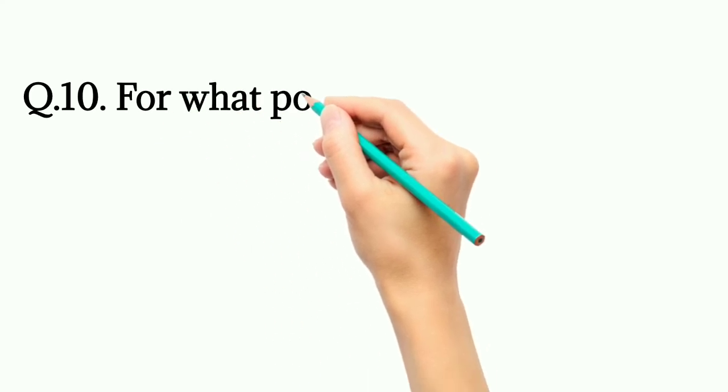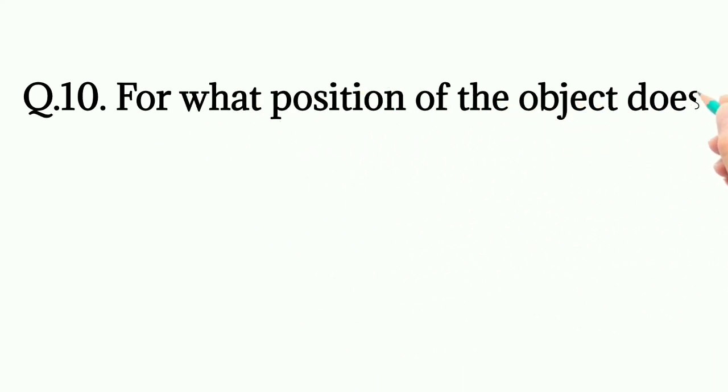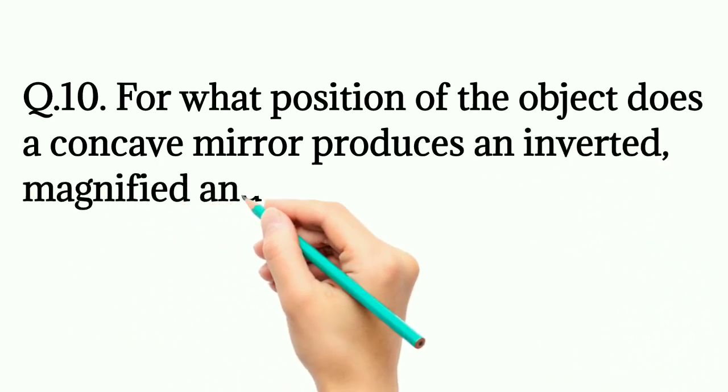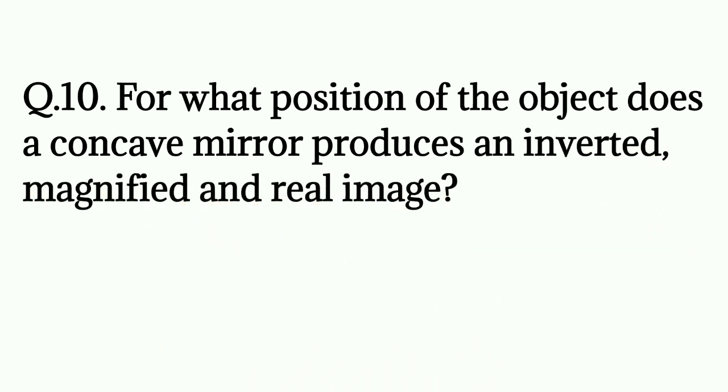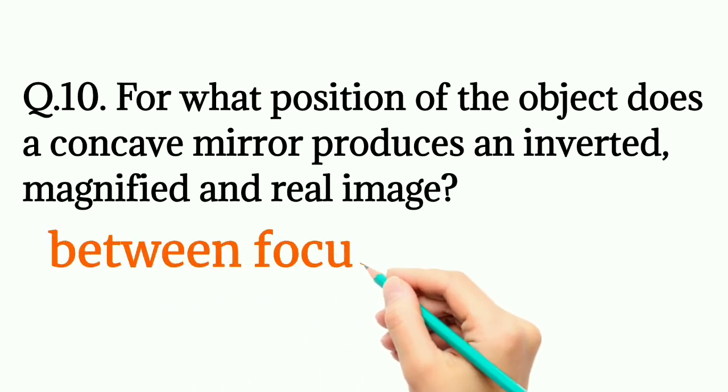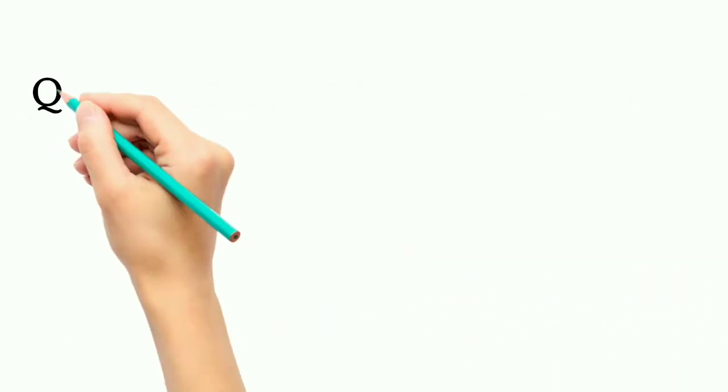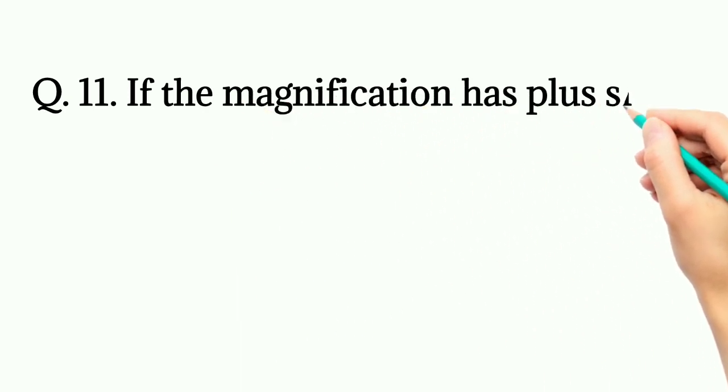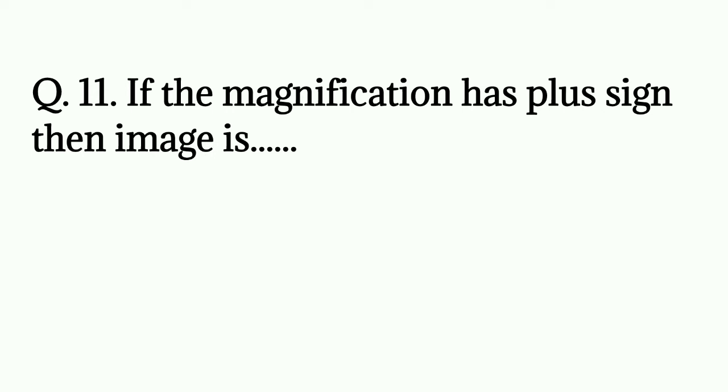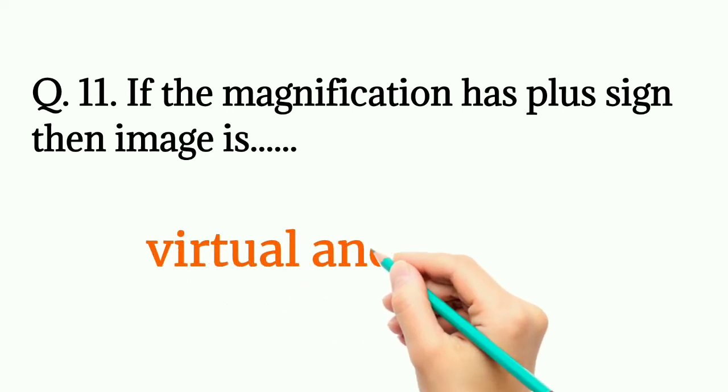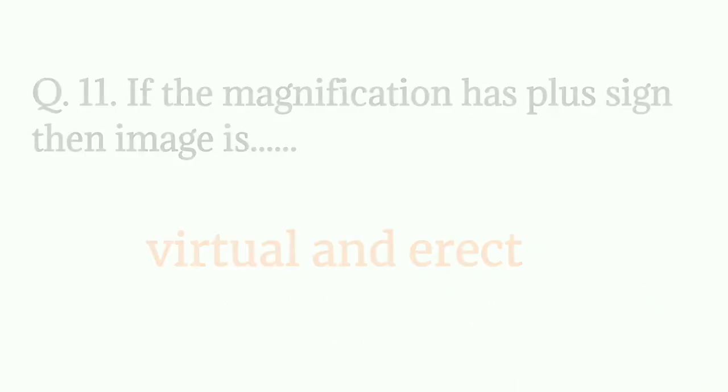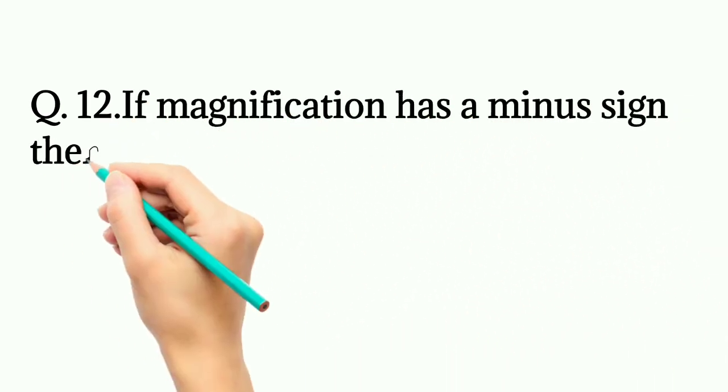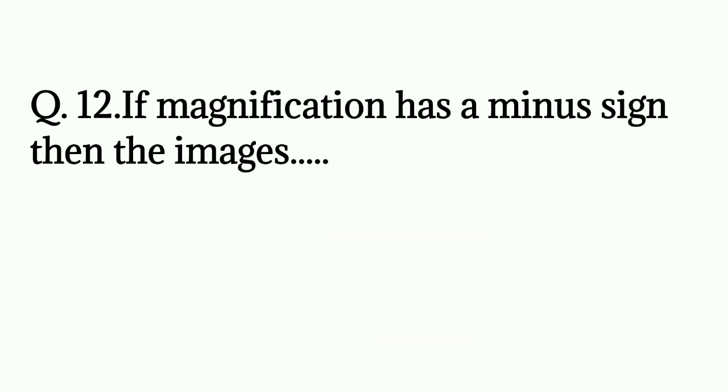For what position of the object does a concave mirror produce an inverted, magnified, and real image? Between focus and center of curvature. If the magnification has a plus sign, then the image is virtual and erect. If magnification has a minus sign, then the image is real and inverted.